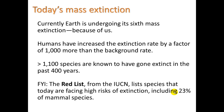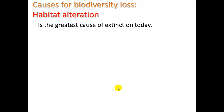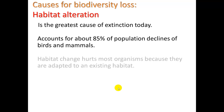The Red List from the International Union for the Conservation of Nature lists species today that are facing a high risk of extinction, including 23% of mammal species. What are the causes? Number one: habitat alteration. It is the greatest cause of extinction today and accounts for about 85% of population declines of birds and mammals.